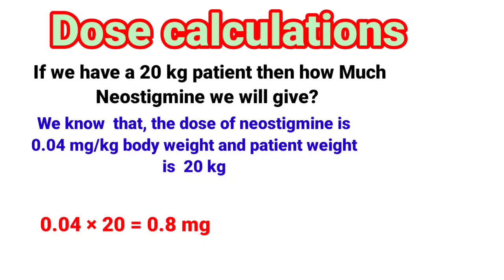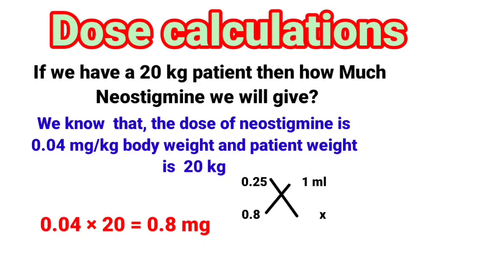Now we need to convert it to milliliters. There is a simple formula: 0.25 mg is present in 1 ml, then 0.8 mg will be in how much ml — for that we will use x. Now we will cross multiply it: 0.8 multiply by 1 is equal to 0.25 multiply by x. Rearranging: x is equal to 0.8 multiply by 1 divide by 0.25. The answer will be 3.2. It means if we have a 20 kg patient, we can give 3.2 ml of that diluted syringe.